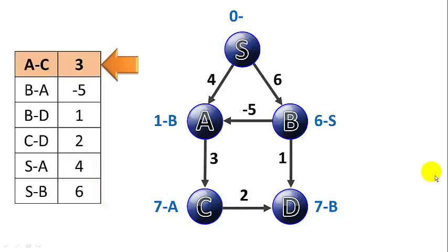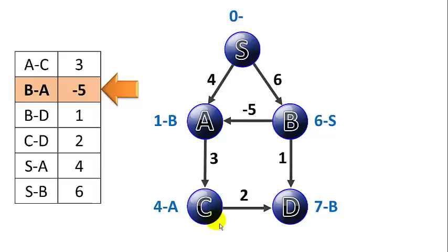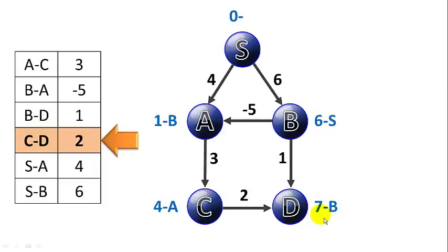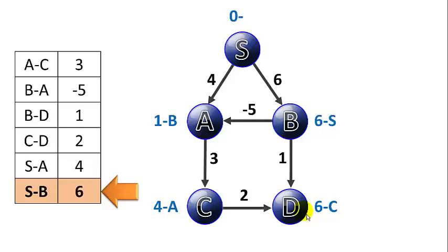Starting iteration 3. A to C of 3: we now have distance to A of 1, so 1+3=4 — we update C's distance to 4, still with predecessor A. B to A of negative 5: we already have distance to A of 1, so no change. B to D of 1: distance to B is 6, so 6+1=7 — already have that. C to D of 2: distance to C is now 4, so 4+2=6 — we can reach D in only 6 using C as predecessor. S to A of 4 is worse than we have, and S to B of 6 is unchanged. Iteration 3 complete.